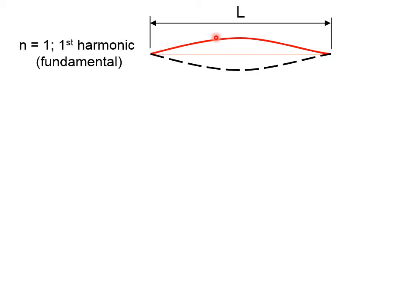Now, this red line shows half of a wavelength. So, the wavelength of the wave that's traveling back and forth on this string is equal to 2 times the length of the string.